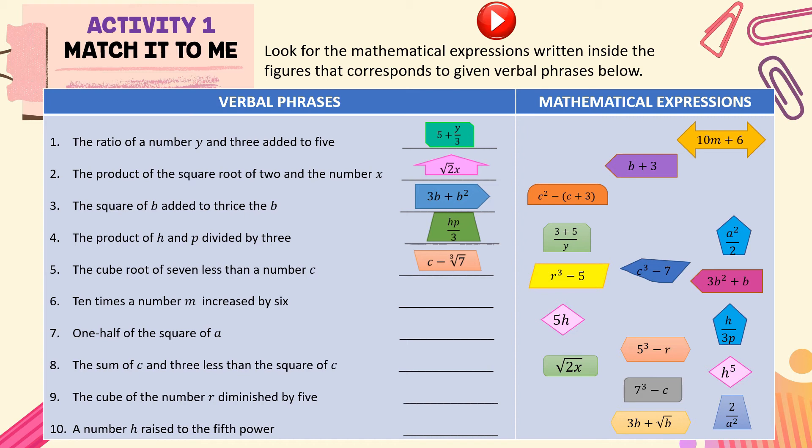For number 6, 10 times a number M increased by 6. We have 10M plus 6. For number 7, one half of the square of A can be written as A squared over 2.